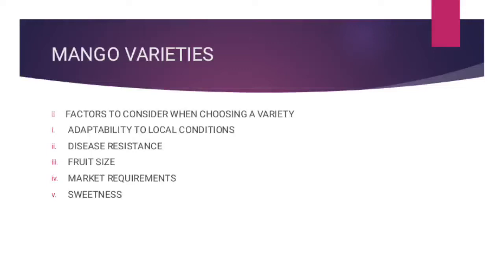Then you consider the market requirements — which varieties do they prefer? For example, if you want to sell to a factory, there are varieties that are more suitable for processing. There are those that are more suitable for selling to export markets because they stay for long after they have ripened before they go bad, and so forth.